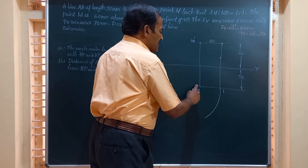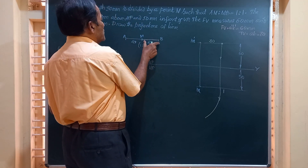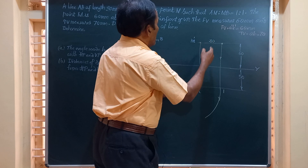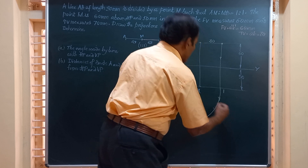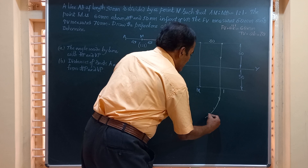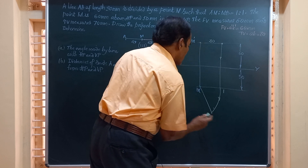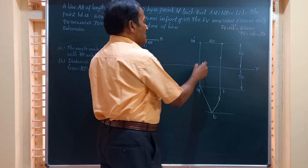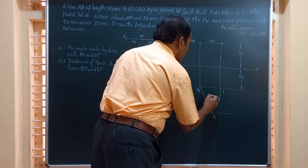Taking M as center and length M1 as radius, I draw an arc. The true length of that half is equal to 45 mm. Now taking M as center and 45 mm radius, I draw an arc. This is the front view; I have made it parallel here at an angle. I draw this arc to cut at a point called B1. This point B1 gives the true length, which has a value of 45 mm.